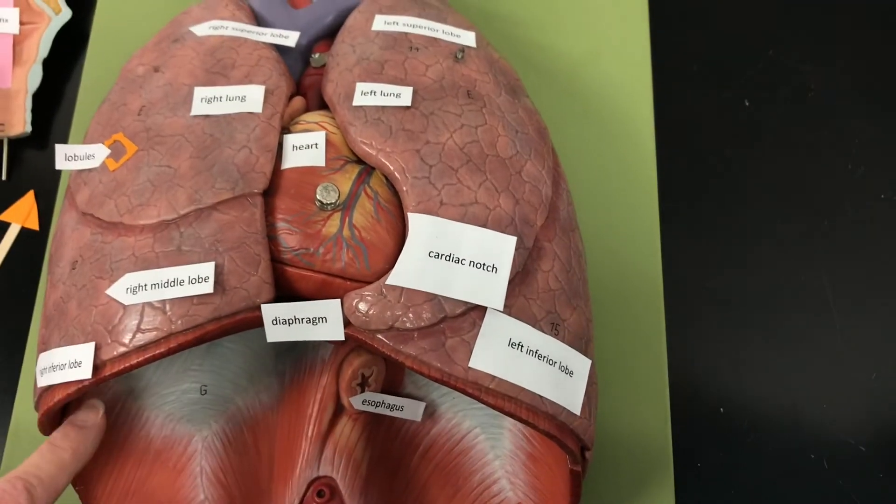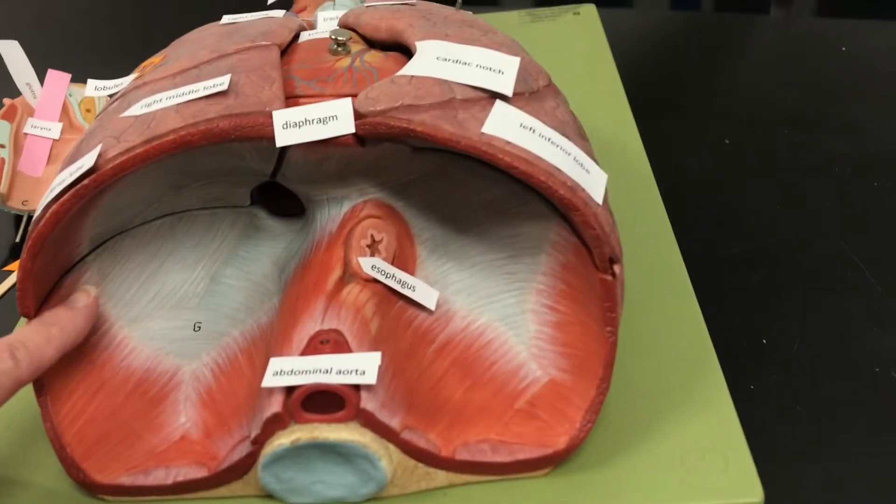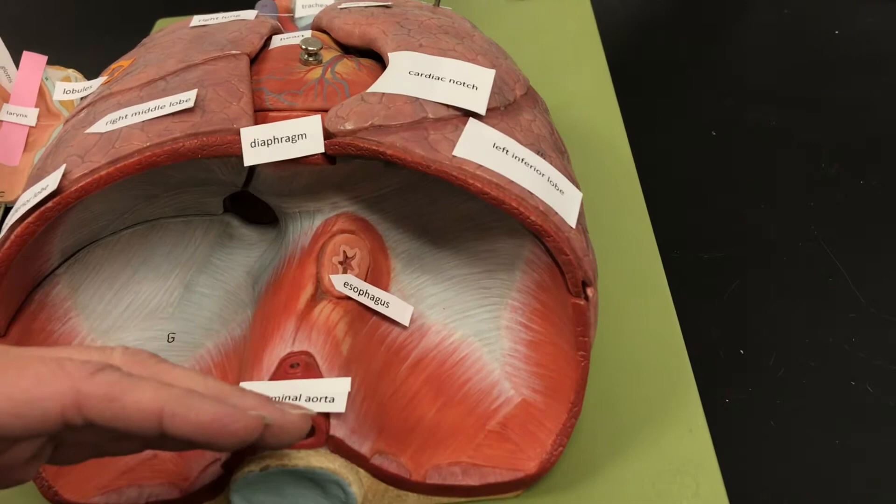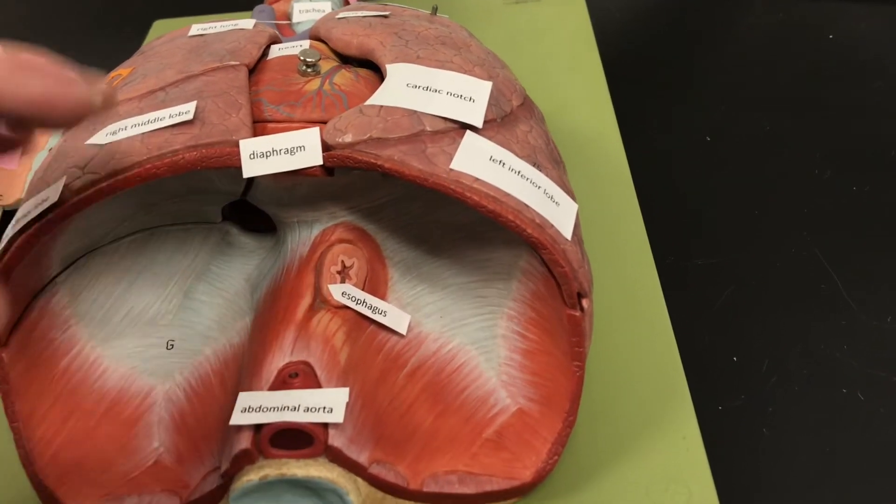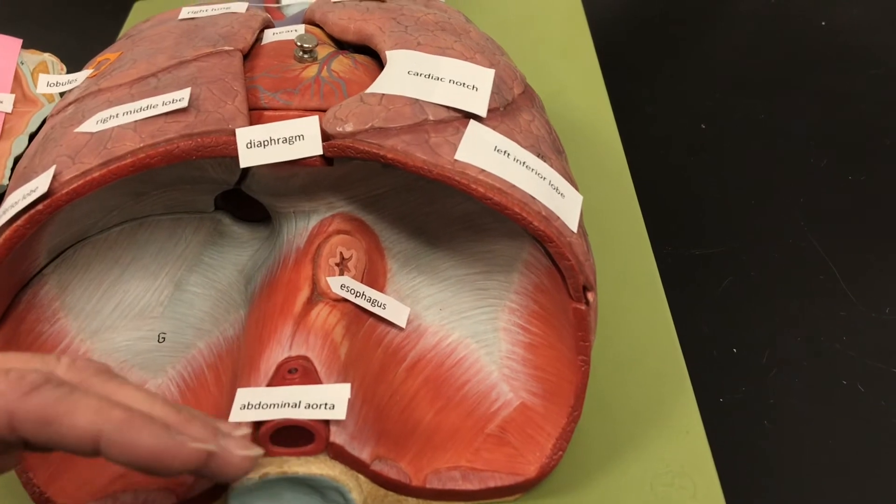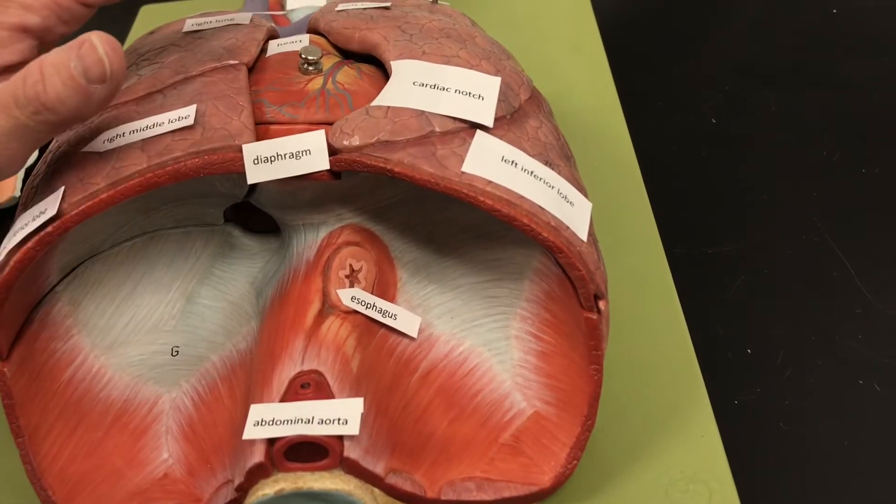Beneath the lungs, we have the diaphragm. The diaphragm is the muscle that's going to assist in breathing. So when it contracts, it pulls down. That's going to allow the lungs to expand. And when you exhale, it's going to relax. It's going to push up. It's going to help push the air out of the lungs.